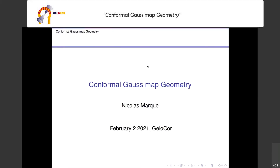Thank you to all of you for being here and thank the organizers for giving me the opportunity for this mini-talk. It's going to focus around interactions between differential geometry and Lorentz geometry, thanks to this tool called the conformal Gauss map.